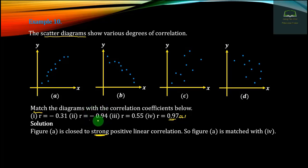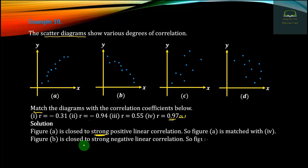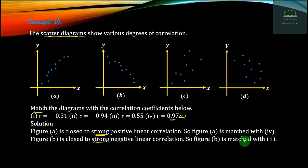So, b is close to strong negative linear correlation. Let's figure: b is much more than 2. Minus 0.95 is much more than 2, indicating strong negative linear correlation.